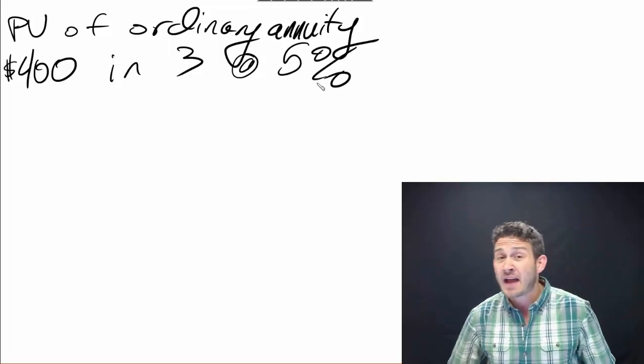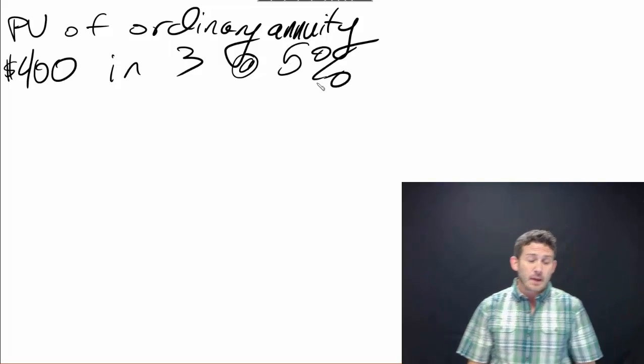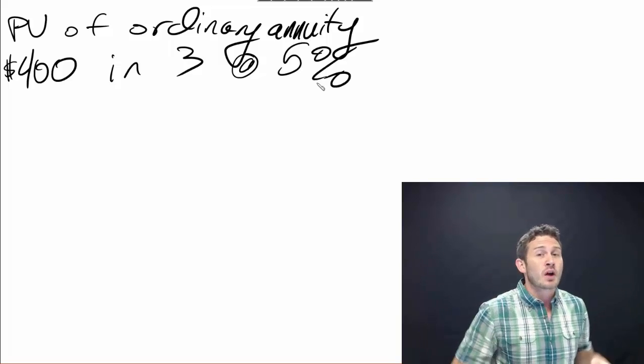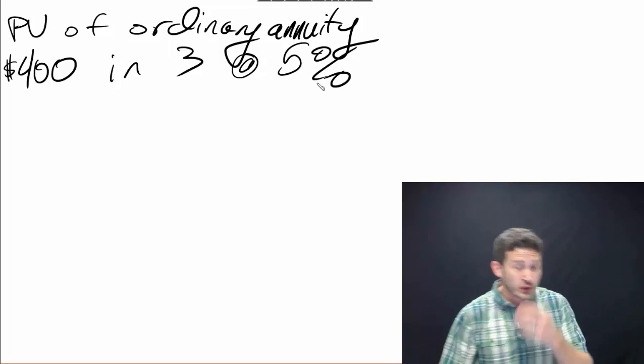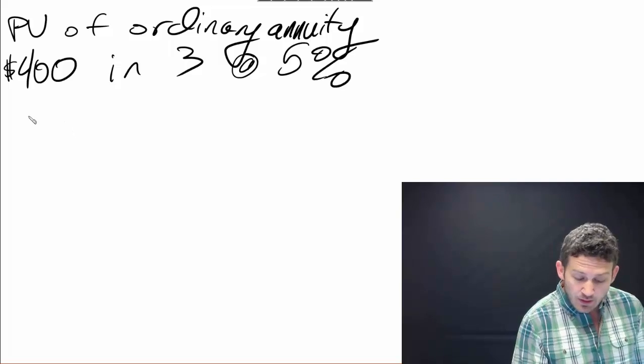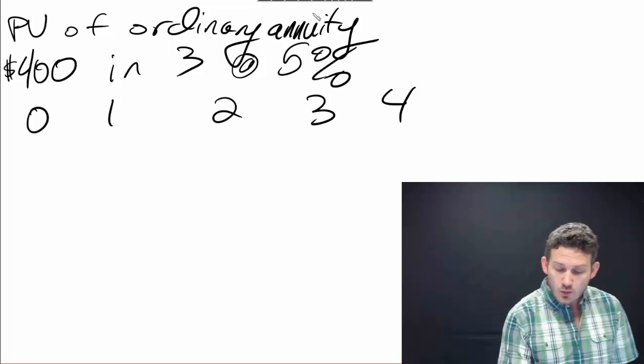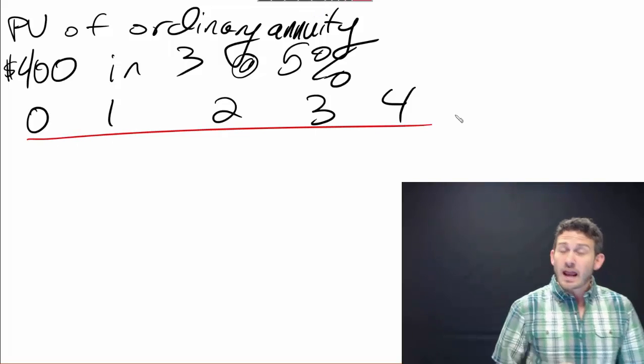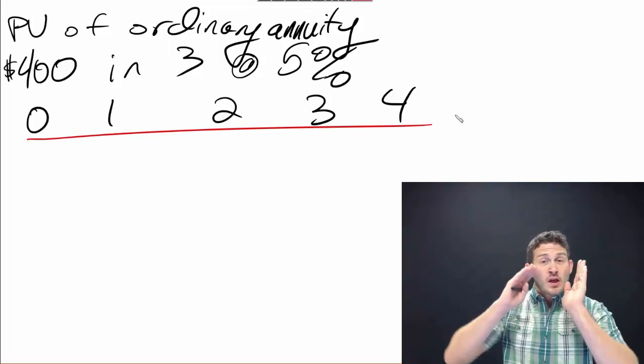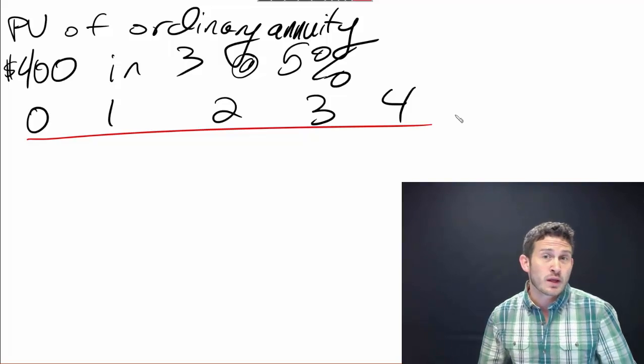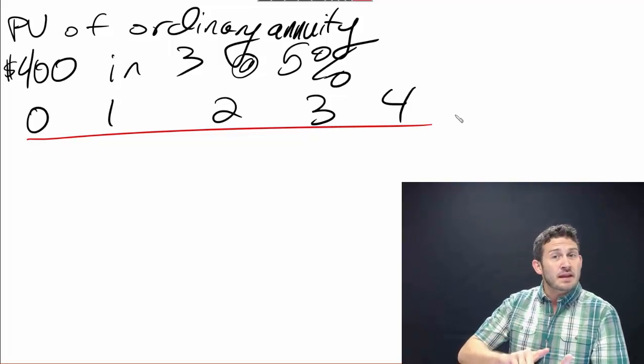So what this means is that we have a three-year $400 annuity, which means that we're going to have payments. We're looking at our time periods here, and what that means is that we're going to have payments that are coming in. A three-year $400 annuity means that our first payment is coming in one year.